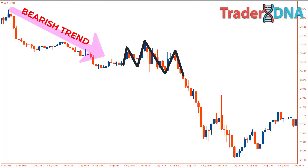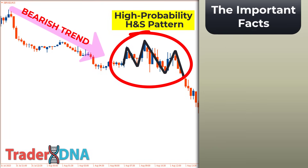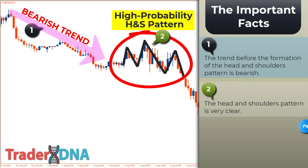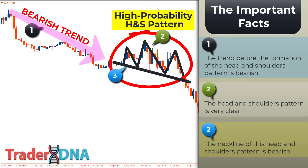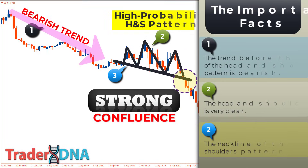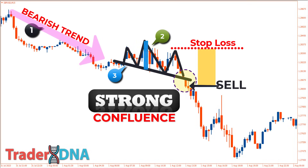It's a special pattern — when you come across it you're presented with a golden opportunity to profit. Important facts: first, the trend before the formation is bearish; second, the head and shoulders pattern is very clear; third, the neckline is bearish — a very strong confluence. If the price successfully drops and closes below the neckline area, it's a sign the bearish trend is back on track. Open a sell position on the next candle with a stop loss at the nearest swing high; the minimum target is the distance between the head and the neckline.